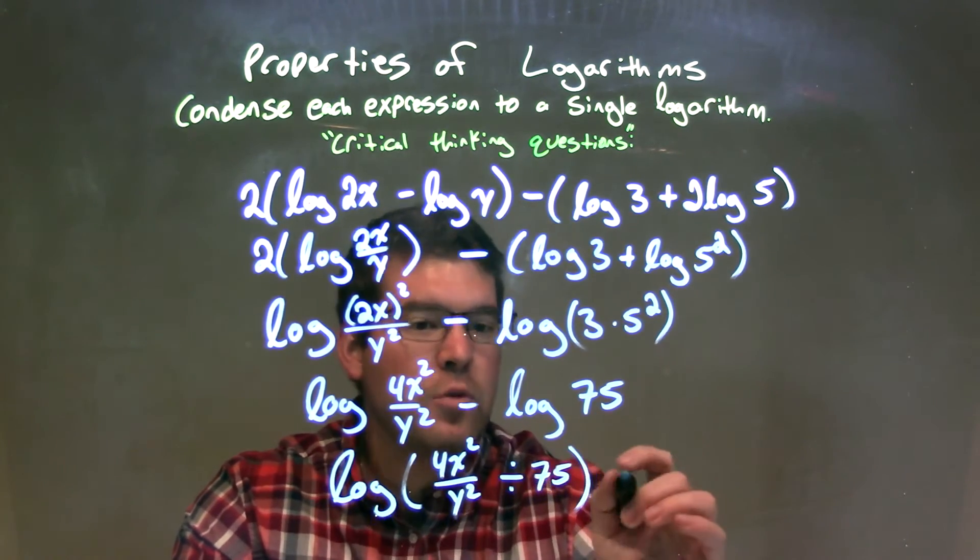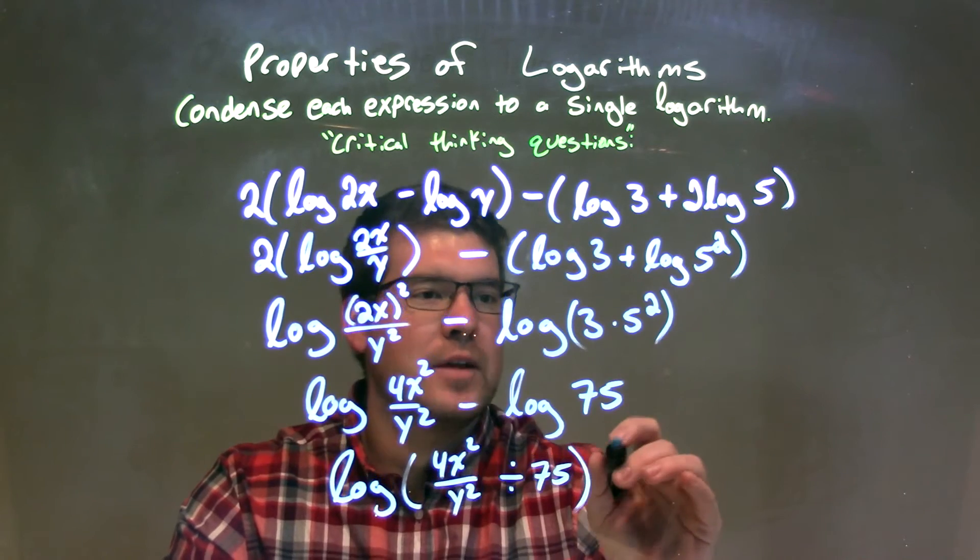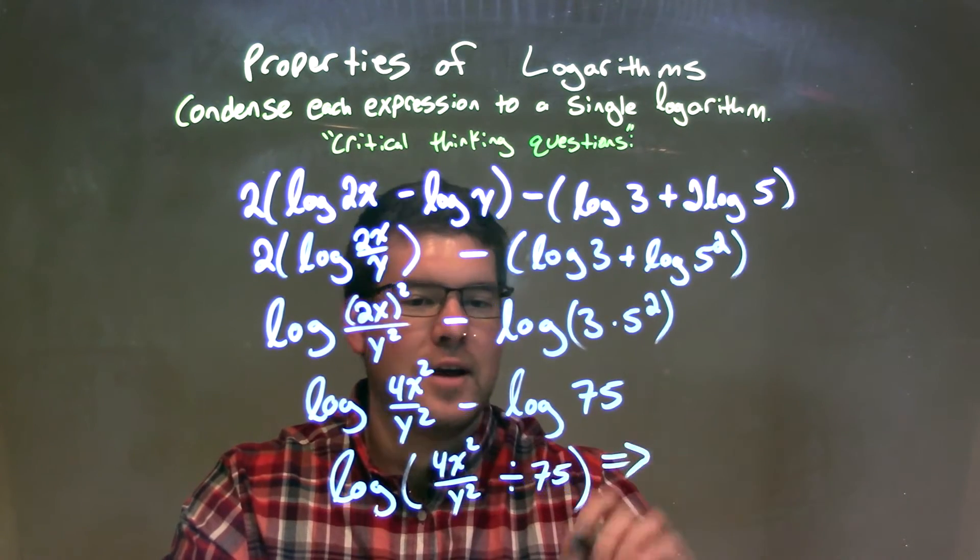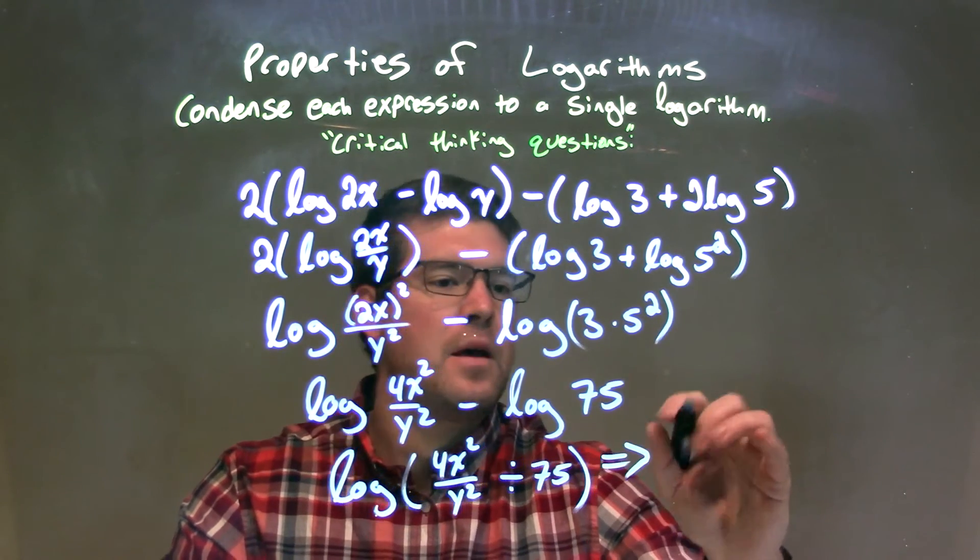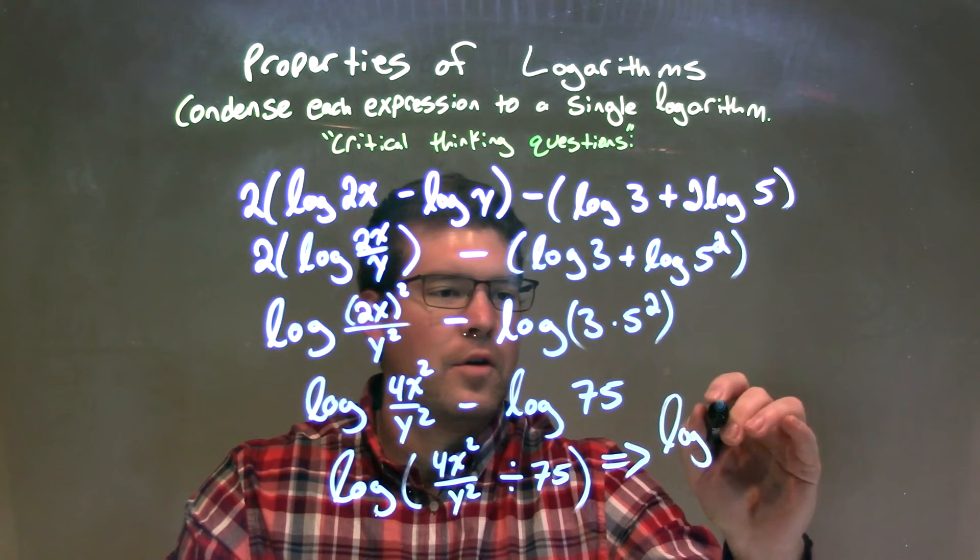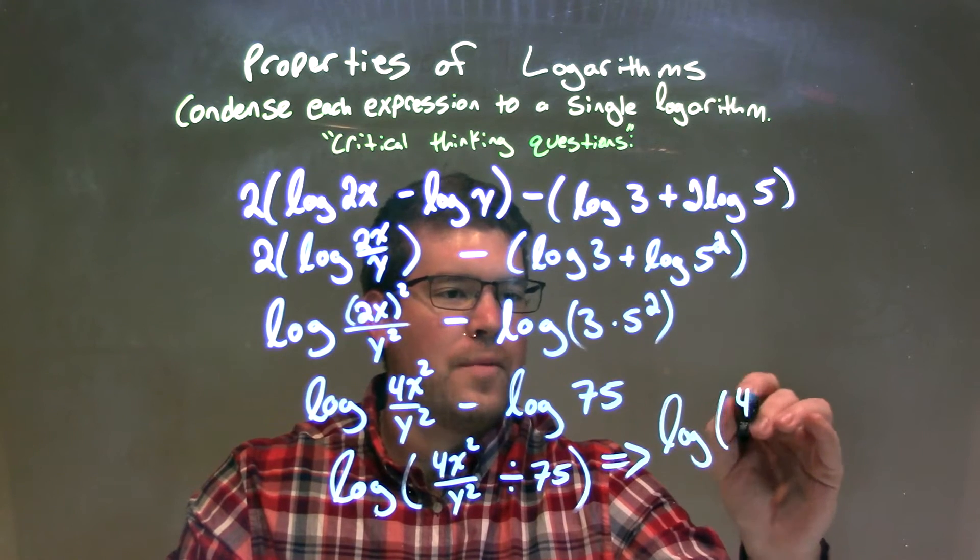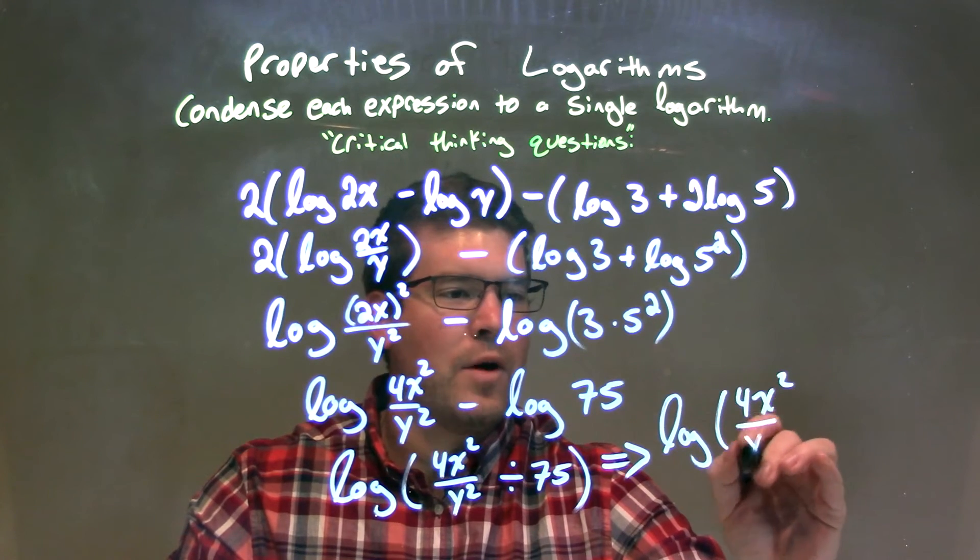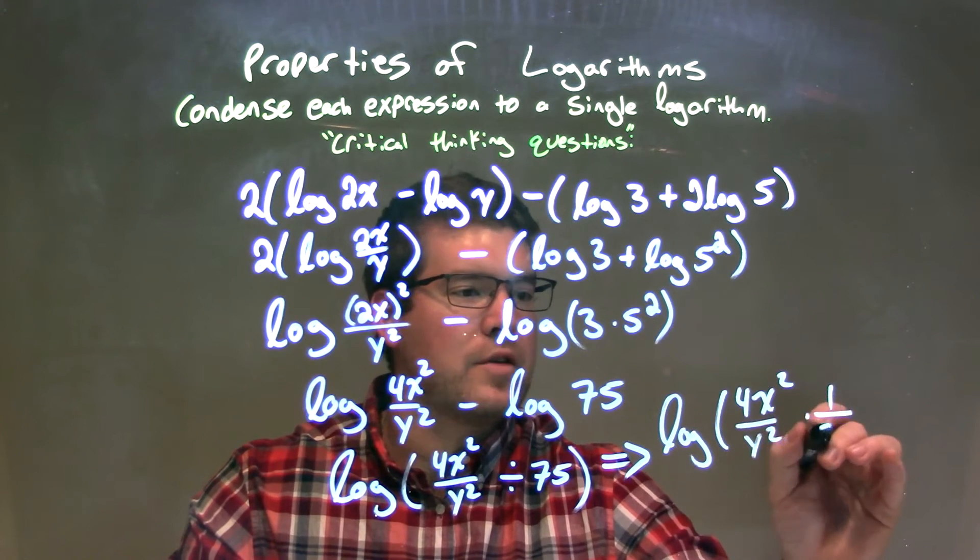So when I do that, when I think about that, okay, I'm going to transition over here. I have a log, now log of 4x squared over y squared times 1 over 75.